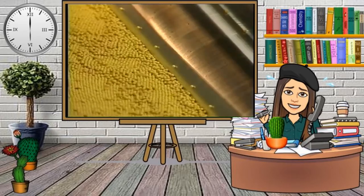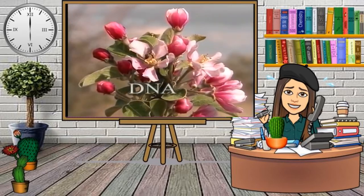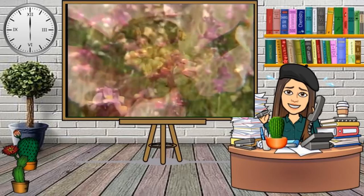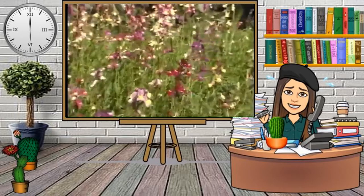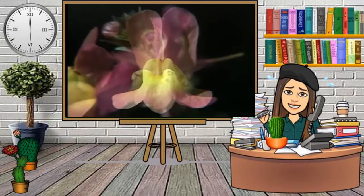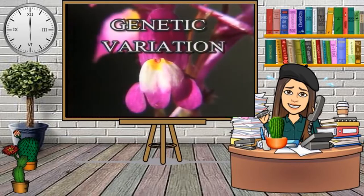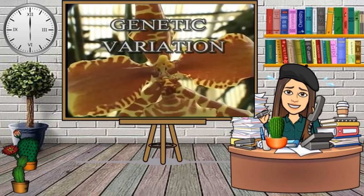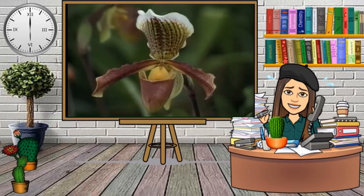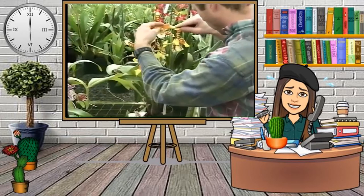In reproduction by seed, also called sexual reproduction, male and female genetic material or DNA is combined through the process of pollination and fertilization. This type of reproduction produces variable results with new plants showing a mixture of traits from both parents. This seemingly random expression of inherited traits is called genetic variation. Genetic variation gives us the opportunity to develop unique plants which may be of greater value. Through cross-fertilization, we can combine the desirable traits from two parents of the same species.